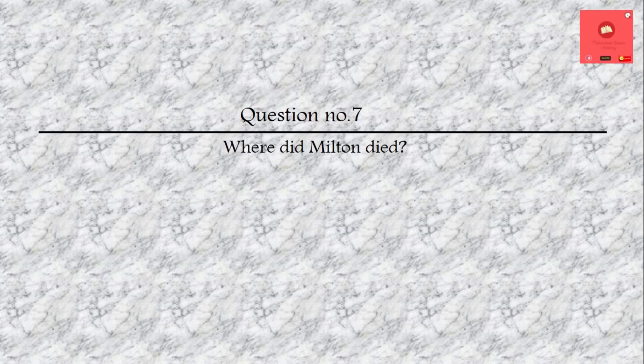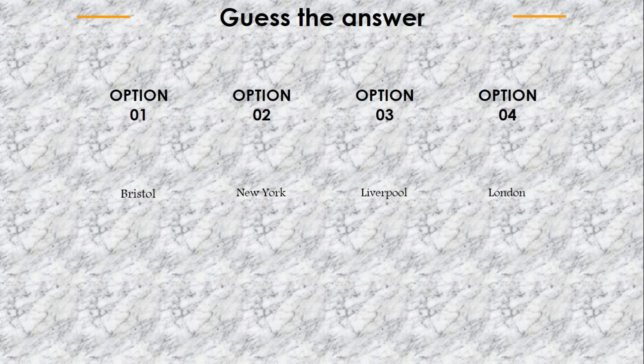Question number 7: Where did Milton die? Options are: Bristol, New York, Liverpool, or London. The answer is London.